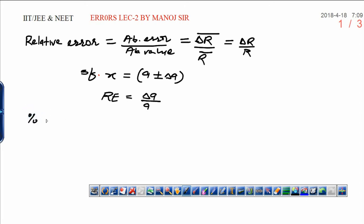Now percentage error. Percentage error means percentage of relative error. It means delta r upon r into 100. By this way, you will get the percentage error.